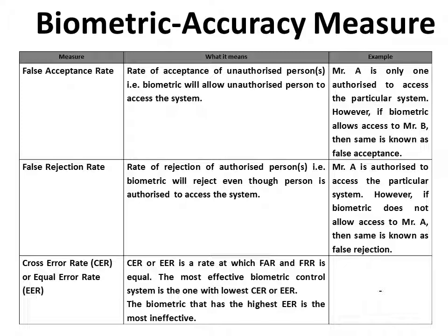Let us discuss three important accuracy measures for biometric control. The first one is False Acceptance Rate — this means the biometric will allow an unauthorized person to access the system. The second is False Rejection Rate — here the biometric will reject a person even though they are authorized to access the system. The third important accuracy measure is Cross Error Rate or Equal Error Rate.